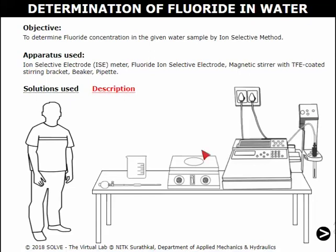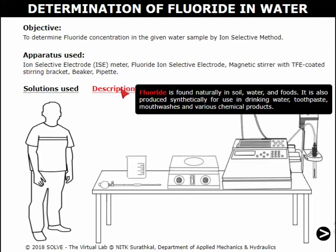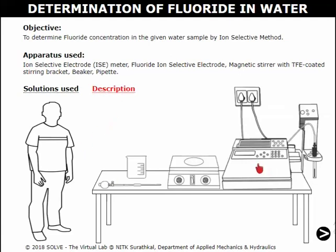Welcome to Lagupata from Sol, the virtual labs. The objective of this simulation is to determine fluoride concentration in the given water sample by ion selective method. To know about the reagents used in the experiment, click on 'Solution Used'. To understand the terminologies, click on 'Description'. The setup used for this simulation is shown here. Throughout the simulation, to proceed to the next step, click on the arrow shown below.